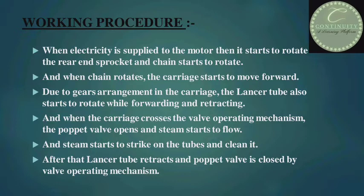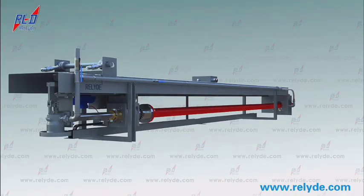Working principle of the soot blower: when electricity is supplied to the motor, it starts to rotate the rear end sprocket and the chain starts to rotate. When the chain rotates, the carriage starts to move forward. Due to the gear arrangement in the carriage, the lancer tube also starts to rotate while forwarding and retracting. When the carriage crosses the valve operating mechanism, the poppet valve opens and steam starts to flow through the nozzles, strikes on the tubes and cleans them. After cleaning, the lancer tube retracts and the poppet valve is closed by the valve operating mechanism. Now I am going to show you a video of the working of the long retractable soot blower — you can understand better from this video.